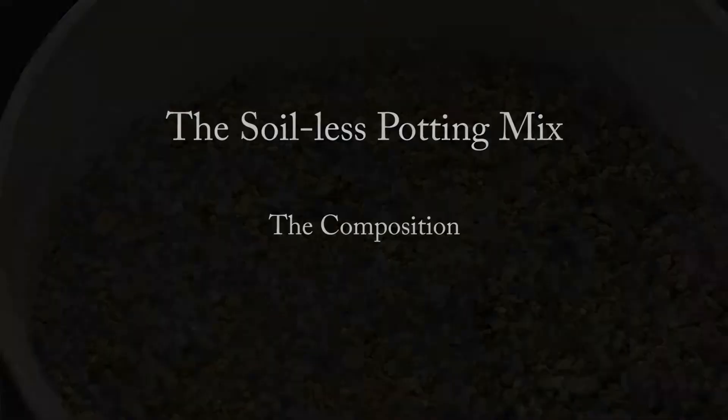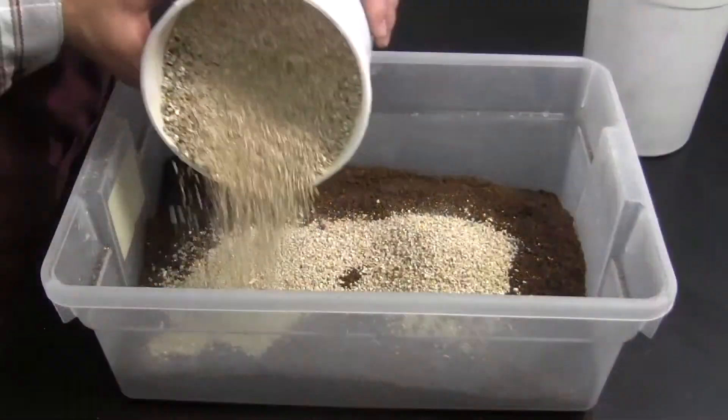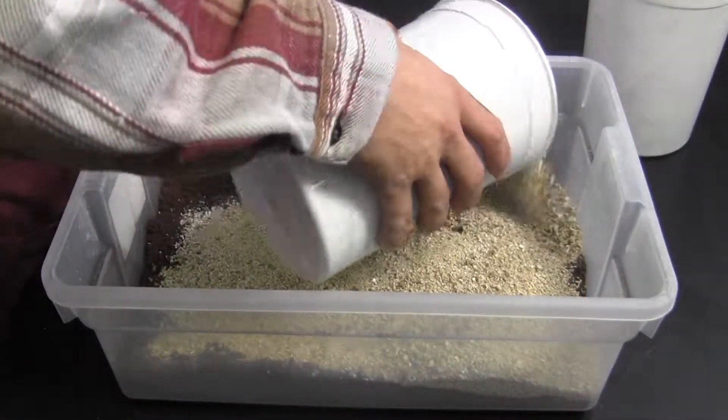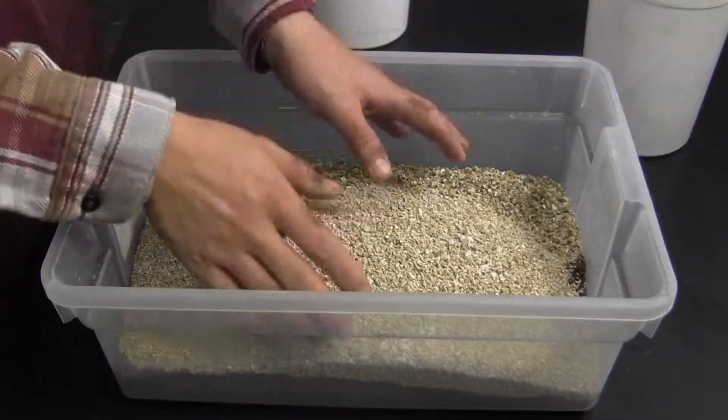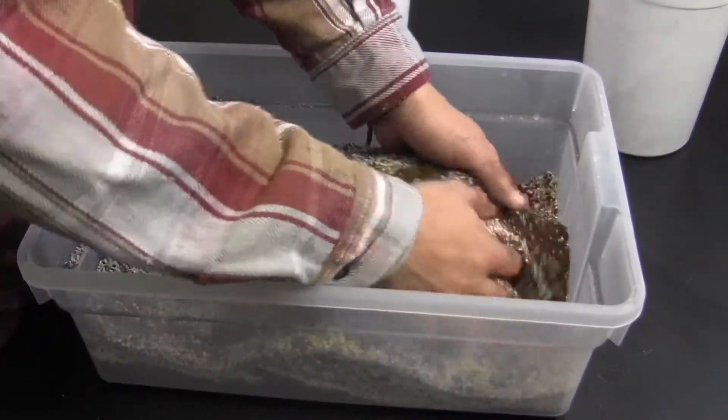The soilless potting mix. The composition is a 50-50 mix of vermiculite and milled peat moss. It is a good medium for growing Brassica Rapa as it is lightweight, has an ability to hold water while allowing air to reach the roots of the plant.